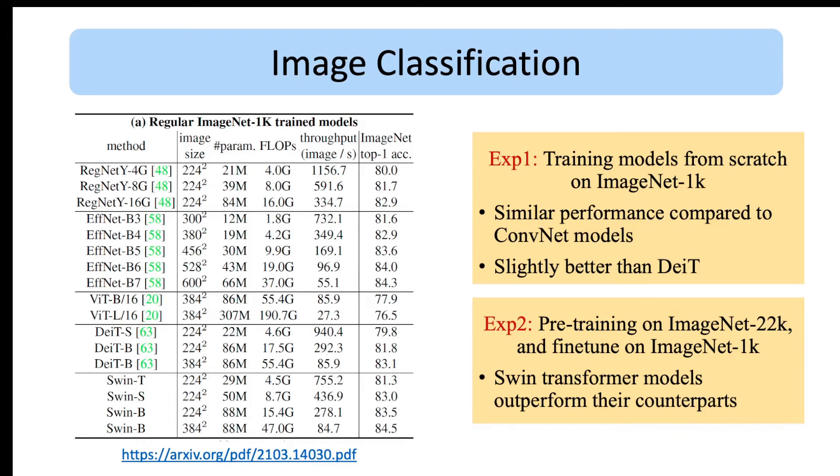As we have previously discussed, the vanilla ViT does not do well on mid-sized datasets, so that's why it shows the worst performance in this table. But as you can see, Swin Transformer shows comparable performance to coordinate models and even slightly better than DeiT models that have similar model size.